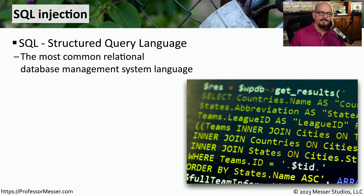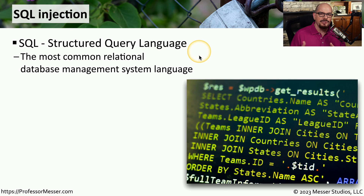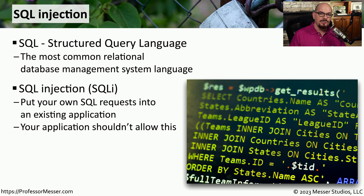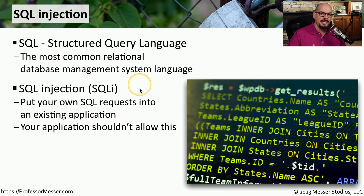Let's look at one specific type: SQL injection. SQL stands for Structured Query Language — probably the most popular way to have an application interact with a database. The application is supposed to take information you input and use it as queries into the database. A SQL injection, or SQLI, allows an attacker to put their own requests into that query. The application should not allow this, but if it doesn't have proper checks, you can send anything you'd like to the database.